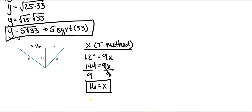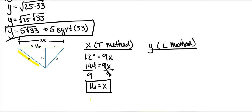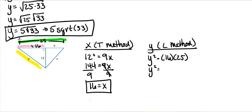For Y, we use the L method. Y squared equals the part of the hypotenuse closest to the leg times the whole hypotenuse, so Y squared equals 16 times 25, which is 400. Taking the square root of both sides: the square root of 400 is a perfect square — it's 20.